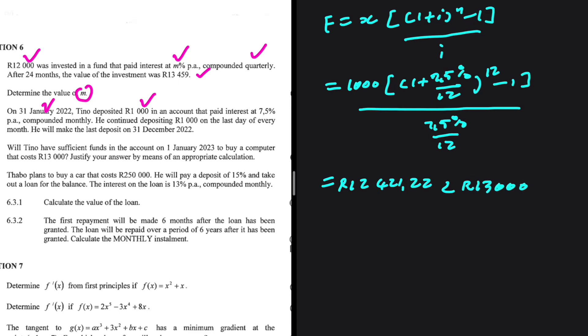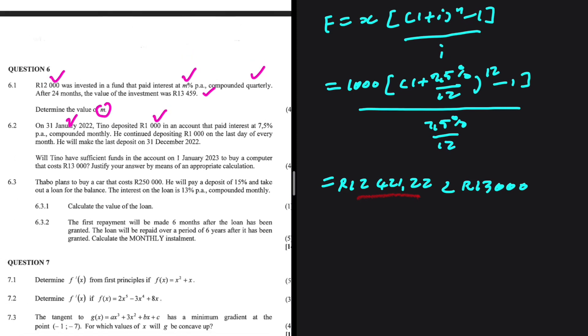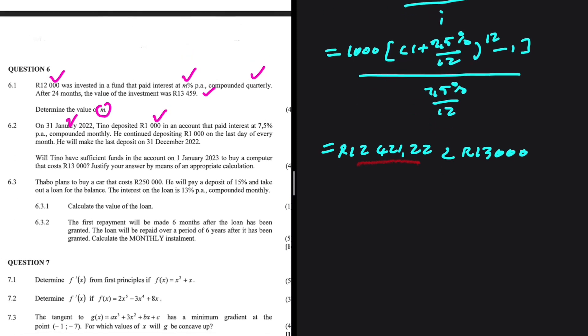We are not going to be able to purchase that computer that costs 13,000 because our future value of R12,421.22 is less than that. That concludes 6.2. Let's take a look at 6.3.